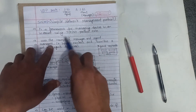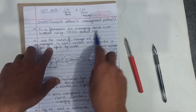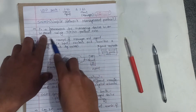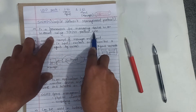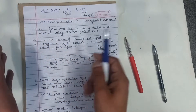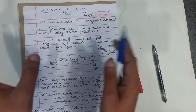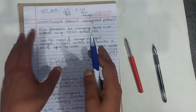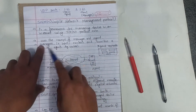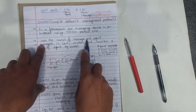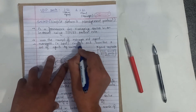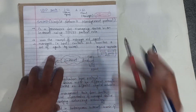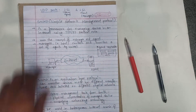SNMP is a framework for managing devices in an internet using the TCP/IP protocol suite. It means devices are managed in a framework. The key concept here is manager and agent.